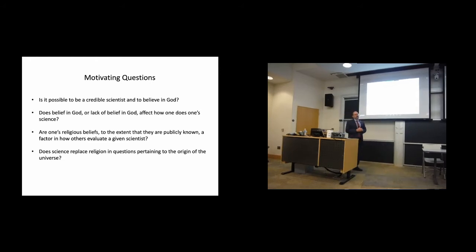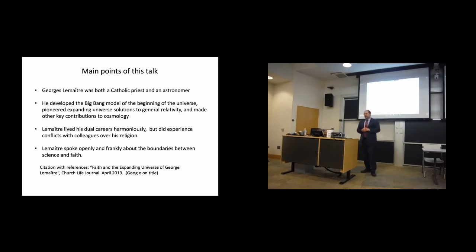So what I'm going to cover in this talk are the following. Lemaître was both a Catholic priest and an astronomer, and one of the most extraordinary cosmologists of the 20th century. That's not very well known. He not only developed the Big Bang model of the beginning of the universe and pioneered solutions to the equations of general relativity, which at the time that he worked were only 10 years old, but he made other key contributions to cosmology that many people don't realize. In fact, he was actually a remarkable polymath.